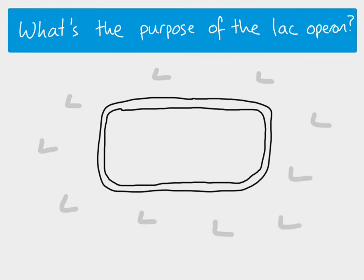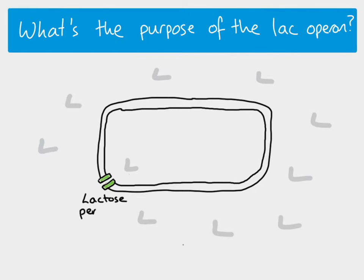If there's no glucose but there is something else such as lactose, then the bacterial cell can use lactose instead. To do that, the bacteria has to take the lactose into the cell, and in order to do that the cell needs a transport protein. This transport protein is called lactose permease, and since it's a protein there is a gene that is transcribed and translated to produce it — the gene for lactose permease is called lac Y.